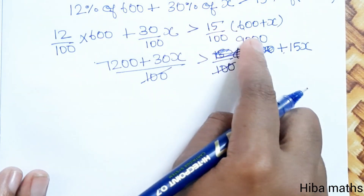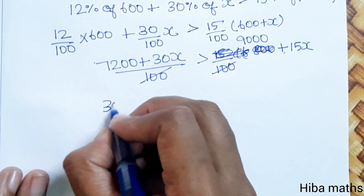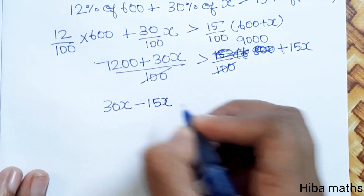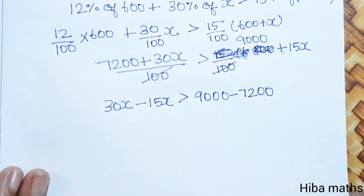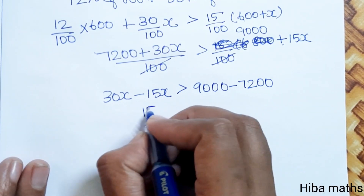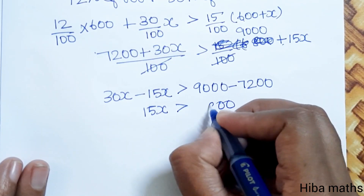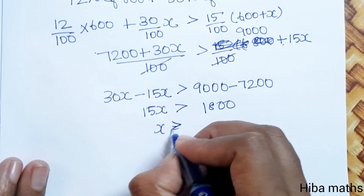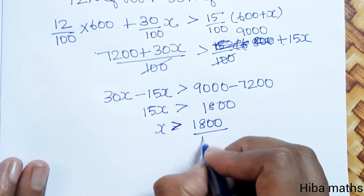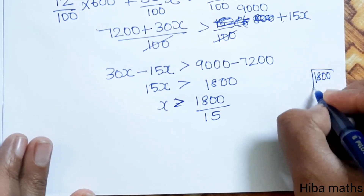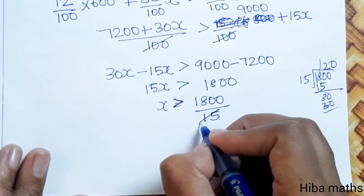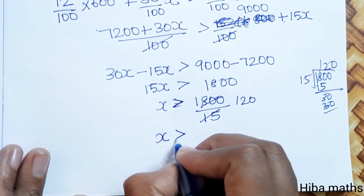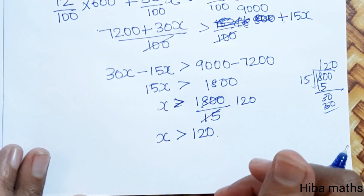Solving the first inequality: after cancelling the 100 on both sides, we get 7200 + 30x > 9000 + 15x. Rearranging: 30x minus 15x > 9000 minus 7200, which gives 15x > 1800. Therefore x is greater than 1800 divided by 15, which equals 120. So x should be greater than 120.